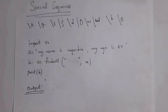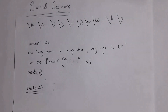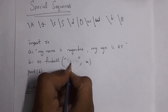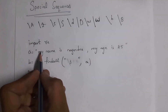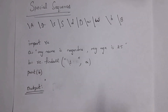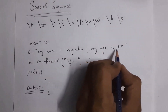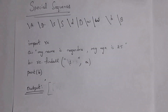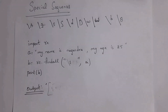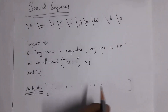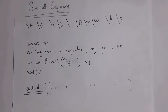Next I'll explain `\s` (backslash small s), which stands for space. `\s` is used to identify how many spaces are present in a given sentence. For example, in 'my name is nagendra, my age is 25', when I write `re.findall('\s', a)`, it displays all the spaces. There are seven spaces in total, so the output will be a list of seven space strings in single quotations.